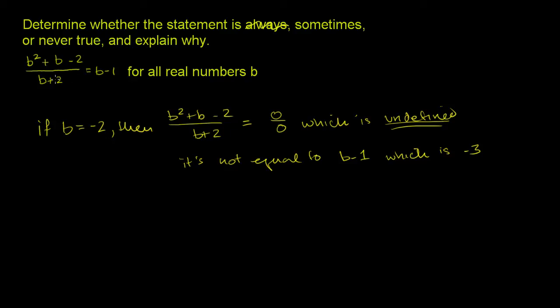So let's see if we can maybe factor the numerator up there. So b squared plus b minus 2, if you think about it, two numbers when you take their product is negative 2, and when you add them you get 1, well that's going to be positive 2 and negative 1. So the numerator we can rewrite as b plus 2 times b minus 1, and then the denominator is b plus 2.